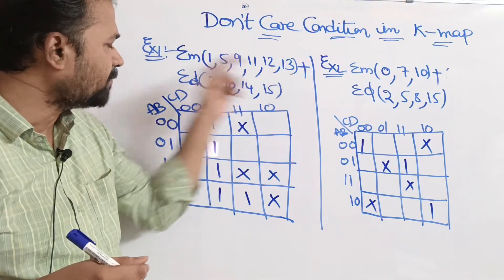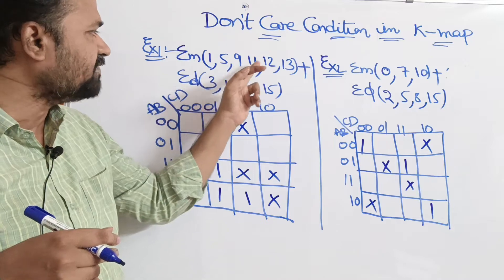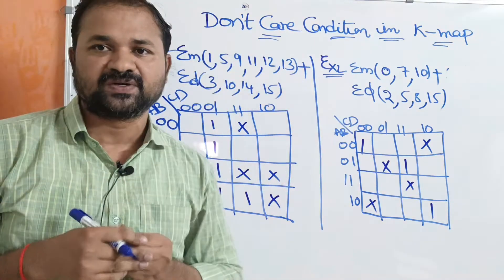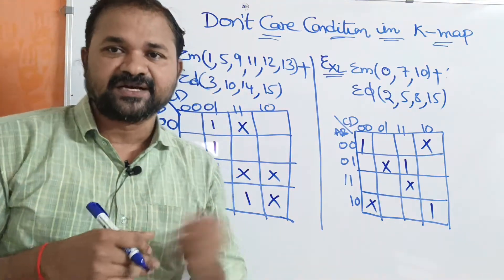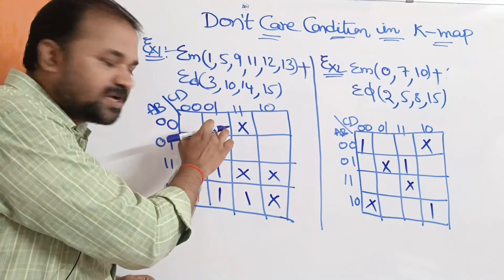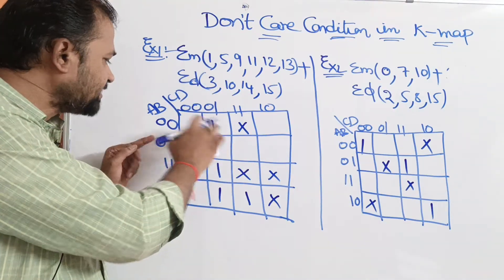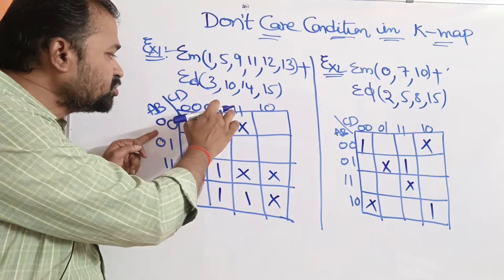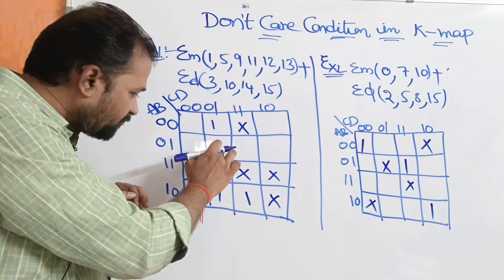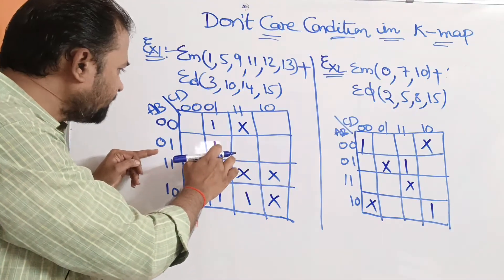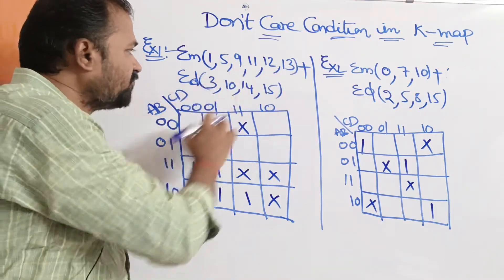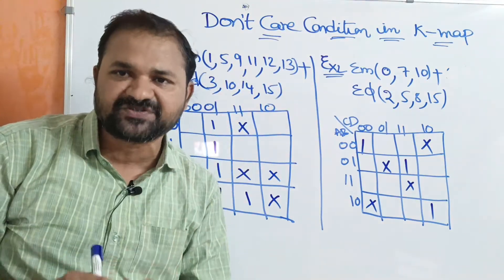What are the minterms here? 1, 5, 9, 11, 12, 13. For all these minterms, the output is 1. So this cell represents minterm 1, which represents input 0, 0, 0, 1. And this cell represents the 5th minterm, representing the combination 0, 1, 0, 1. For all these input combinations, the output is 1.